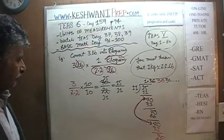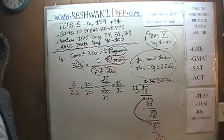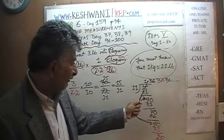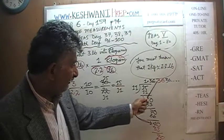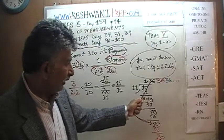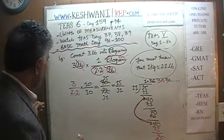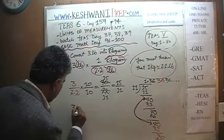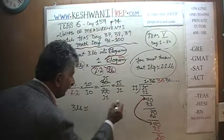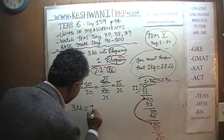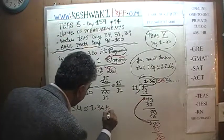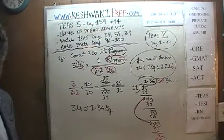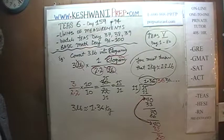We're done — that's your answer. Since the digit after 1.36 is 3, which is less than 5, if you want to round to just 2 decimal places, we can simply say that 3 pounds is approximately 1.36 kilograms. It doesn't take that much time once you know how to do it.